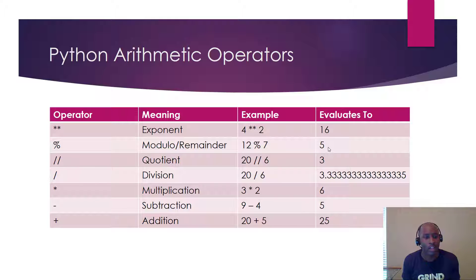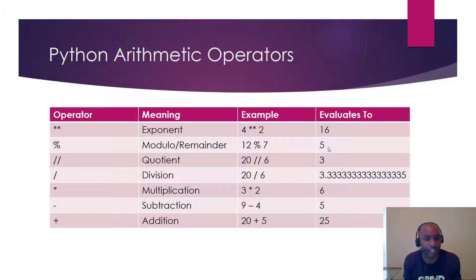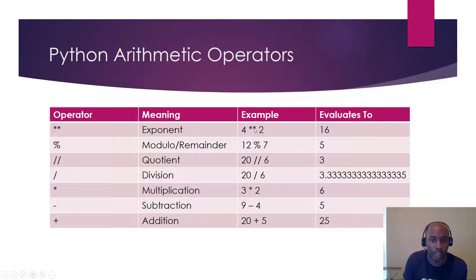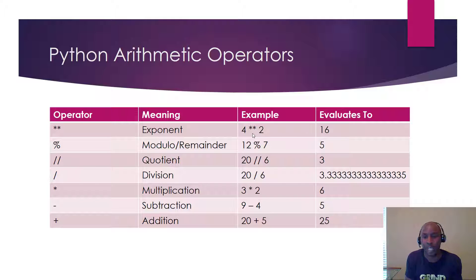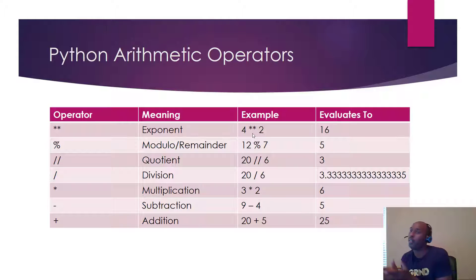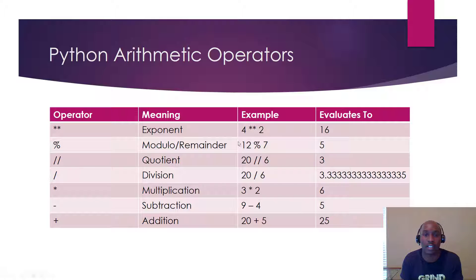The first operator is the exponent operator — two asterisks (`**`). For example, 4 ** 2 is saying 4 to the power of 2, which gives you 16. And 4 ** 4 gives you 256, which is 4 times 4 times 4 times 4. Whatever the numbers, that's the pattern.